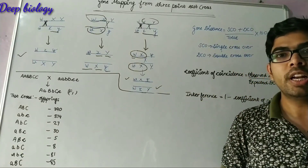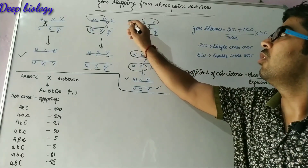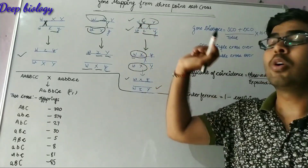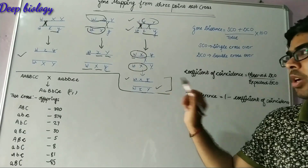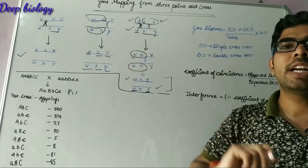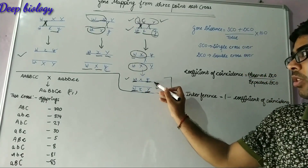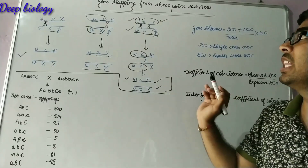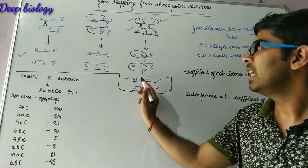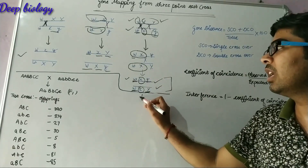In the case of double crossover, the middle gene is swapped. Looking at the parental types, we have capital W, capital X, capital Y and small w, small x, small y. In the double crossover product, capital W and capital Y remain common with the parental type, and small w and small y are also common. But gene small x is swapped with capital X — indicating that the middle gene is X.